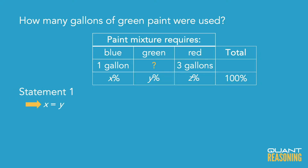I'll start with statement 1, which seems a lot easier to evaluate. Statement 1 is essentially telling us that there were equal amounts of blue and green. Since we know that the blue was one gallon, the green must also be one gallon. So statement 1 is sufficient on its own, and we should go ahead and eliminate the answer choices that claim that it's not.